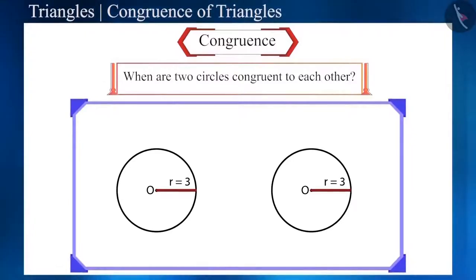Circles drawn with the same radius are congruent to each other. That is, the congruency of a circle depends on the radius.